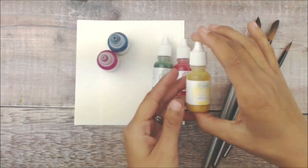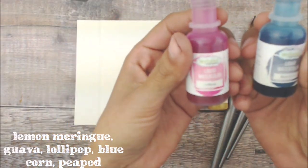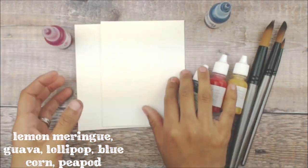For this set I'm using Hippo Birdie stamp set with coordinating dies along with lemon meringue, guava, lollipop, blue corn, and peapod watercolors.